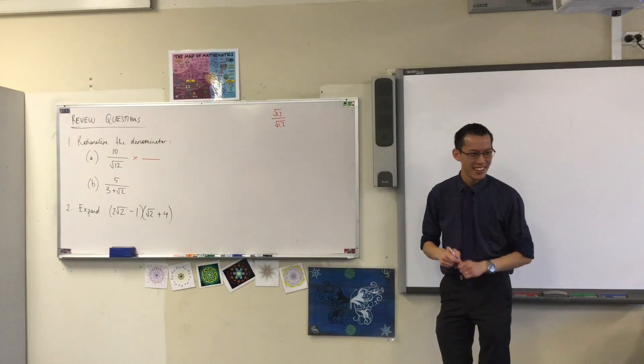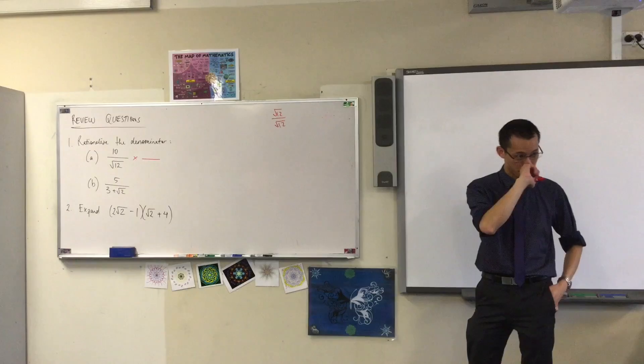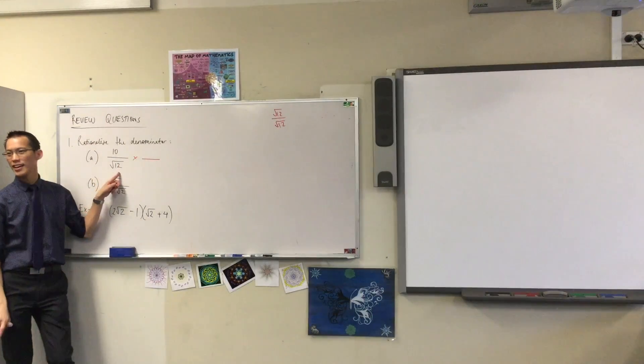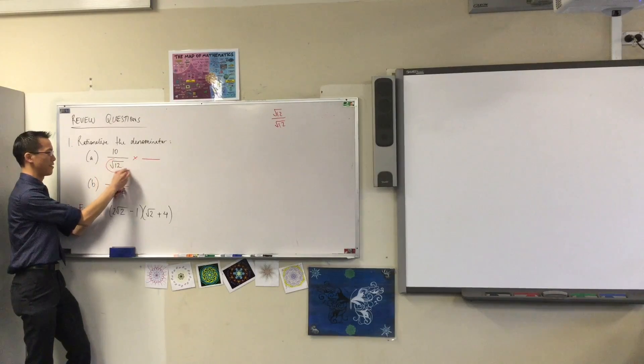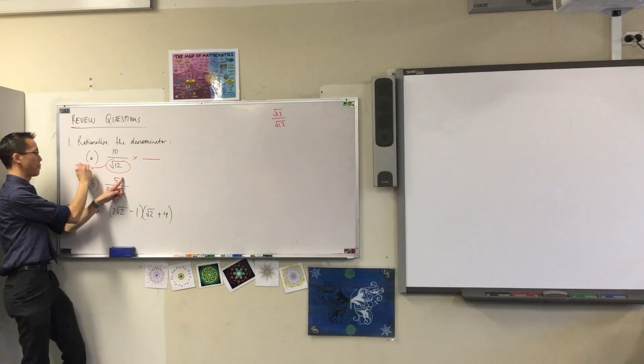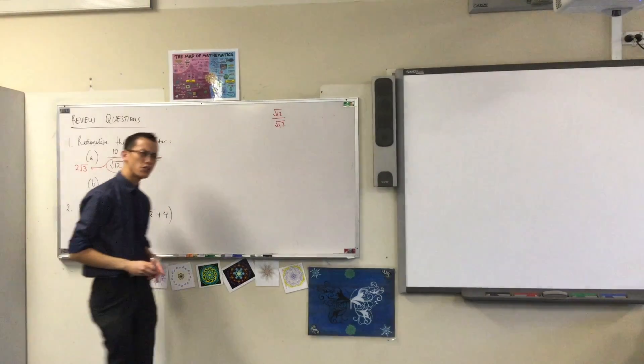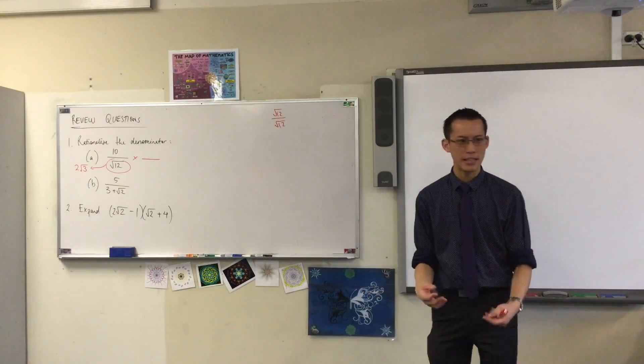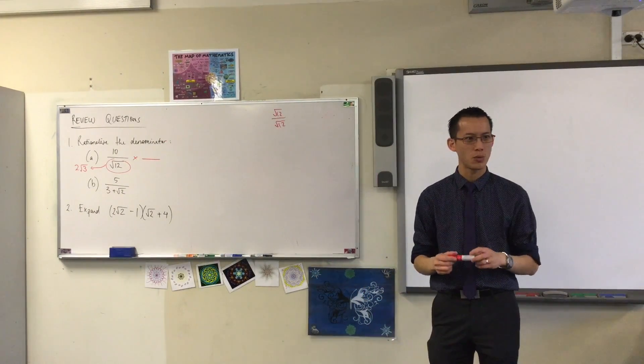Daniel. Okay, so this guy here, right? You can write him like this. Can you see why it's 2 root 3? Why is root 12, 2 root 3? There's actually a couple of steps in between. What's missing?